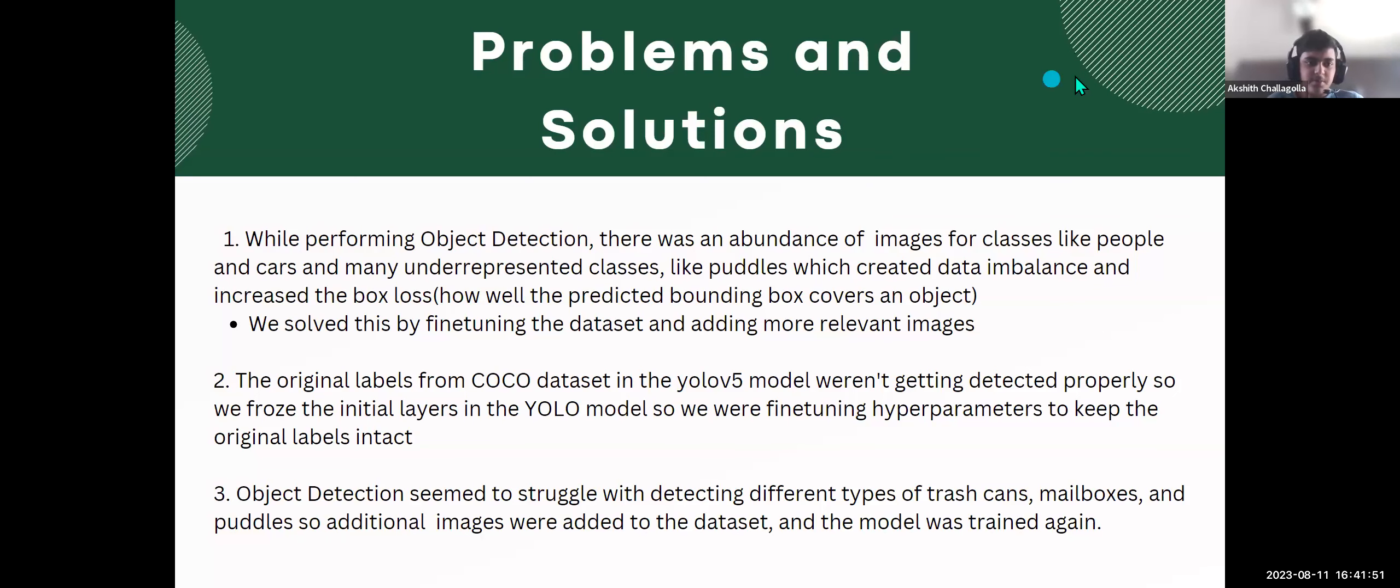While performing object detection, there was an abundance of images for classes like people and cars and many underrepresented classes like puddles, which creates data imbalance and increases the box loss, which is how well the predicted bounding box covers an object. We solved this by fine-tuning the dataset and adding more relevant images. Another problem was that the original labels from the COCO dataset in YOLO V5 weren't getting detected properly, so we froze the initial layers and fine-tuned the hyperparameters to keep the original labels intact.